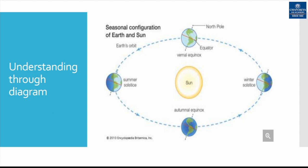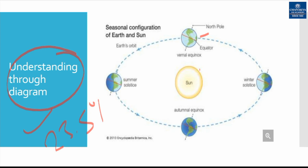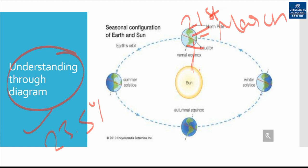Let us understand what solstice is through this diagram, because understanding concepts through diagrams is very informative. We will discuss equinoxes and solstices and how they affect the earth and geographical phenomena. This is the sun and this is our earth. The earth is tilted on its axis by 23.5 degrees. On 21st March, the sun rays are perpendicular to the equator, which brings spring in the northern hemisphere and autumn in the southern hemisphere.